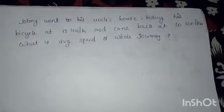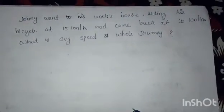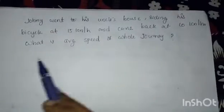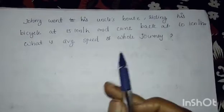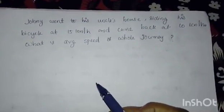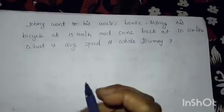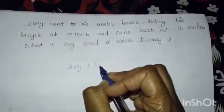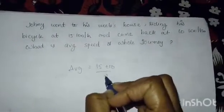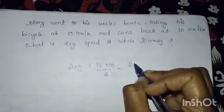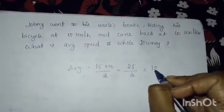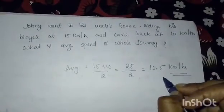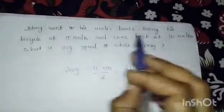The next problem: Johnny went to his uncle's house riding his bicycle at 15 km per hour and came back at 10 km per hour. What is the average speed of the whole journey? Since the distance is the same in both directions, we can find the average speed by taking the average of the two speeds: 15 plus 10 divided by 2, which gives 12.5 km per hour.